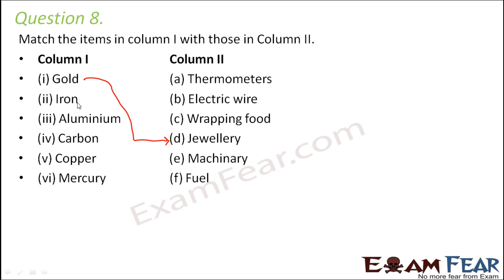Iron is used for machinery because iron is rough and tough, quite solid and hard. Aluminum is for wrapping food because it doesn't react with food and is malleable, so it can be beaten into thin sheets.